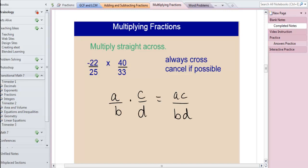So in this particular problem, is there a number that will divide into 22 and into 33? 11, right? So 11 goes into 22 two times. 11 goes into 33 three times. Is there a number that will divide into 25 and 40? 5, right? 5 goes into 25 five times. 5 goes into 40 eight times. Now I can multiply straight across. 2 times 8 is 16. 5 times 3 is 15. I do need to simplify this by changing it into a mixed number, so I end up with 1 and 1⁄15 because 15 goes into 16 one time with 1 left over.